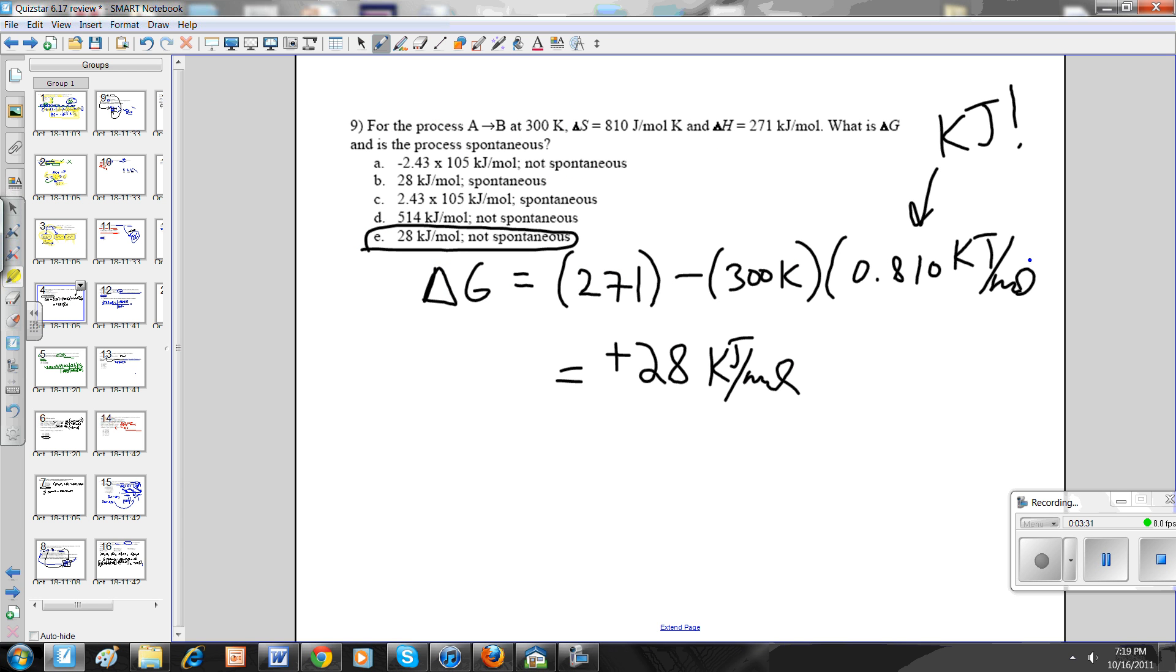Next one. This is just asking you, is the process spontaneous? The best way to figure out if a process is spontaneous or not is to calculate delta G. The formula is going home to supper. So delta G is equal to delta H minus T times delta S. So it's going home to supper. So what you have to do is you take the H value, which is giving you the problem, 271 kilojoules. I put delta H there.